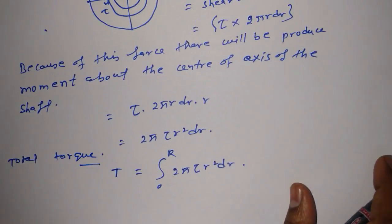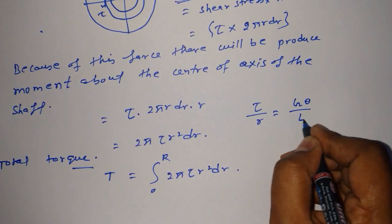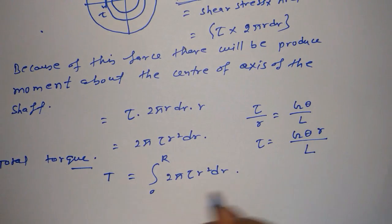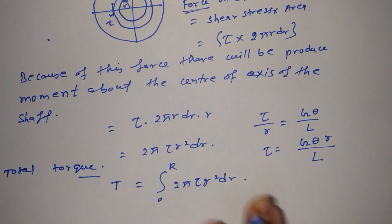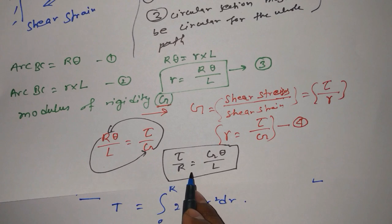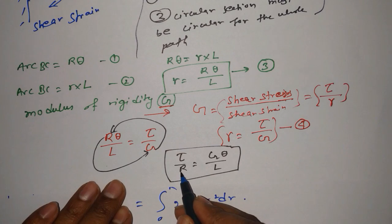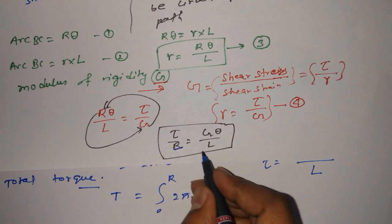Now, we know from equation 3 that tau/R = G·theta/L, therefore tau equals G·theta·r/L. Note that here small r and capital R are the same variable — I am considering small r for the cross-section integration. So we substitute tau equals G·theta·r/L into the integral.